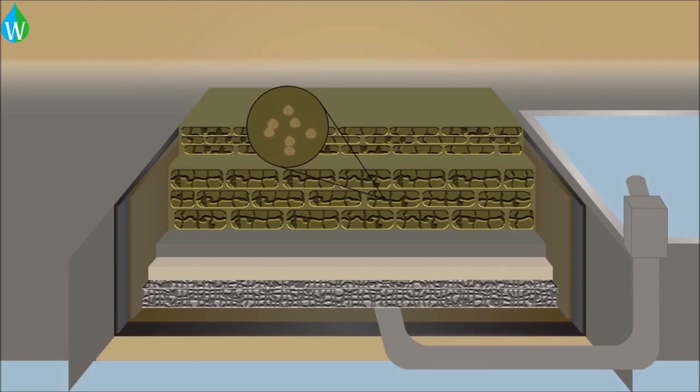Bacteria in landfill break down the trash under anaerobic conditions, meaning in the absence of oxygen, and so a byproduct of this breakdown is landfill gas. This presents a hazard because this gas contains methane, which could explode, therefore it has to be removed.